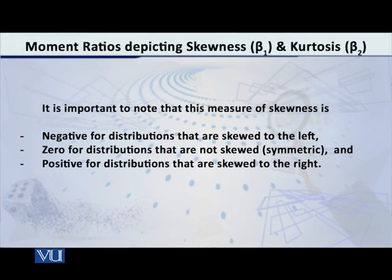And this ratio will be negative if the distribution is negatively skewed. This ratio will be equal to zero if the distribution is not skewed, if it is symmetric. And this ratio will be positive if the distribution is positively skewed. So it's a very simple way of assessing. You can compute this ratio for any variable.